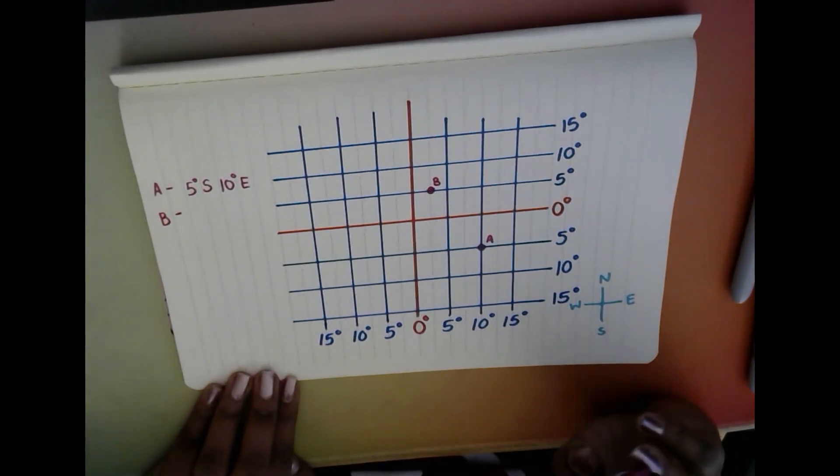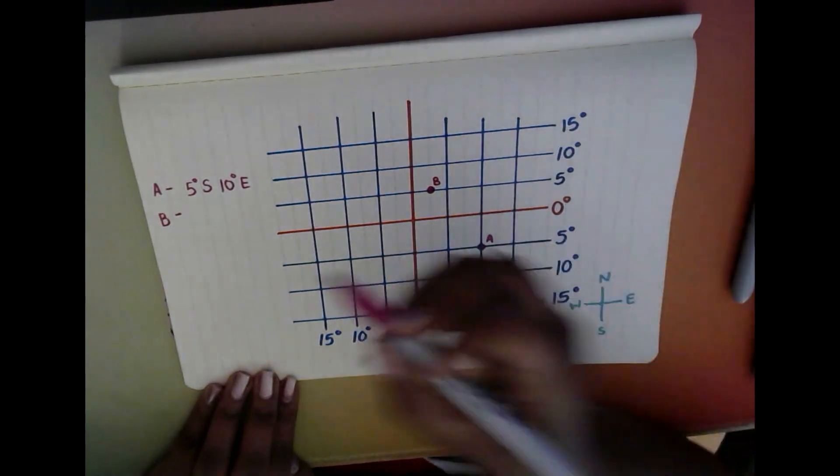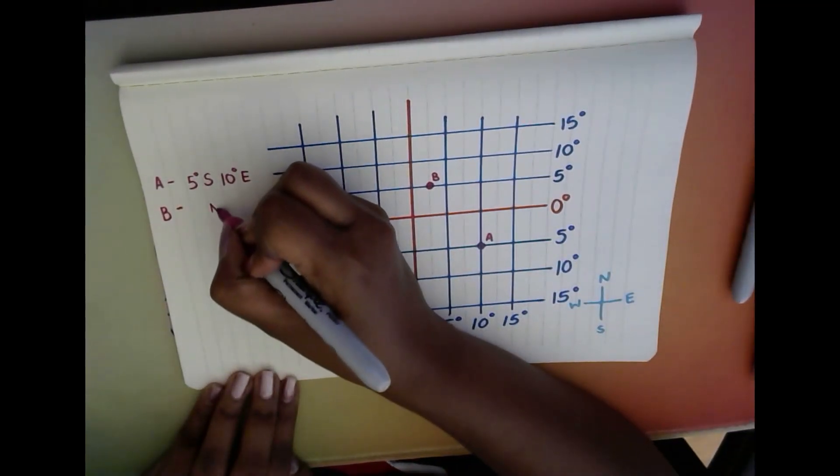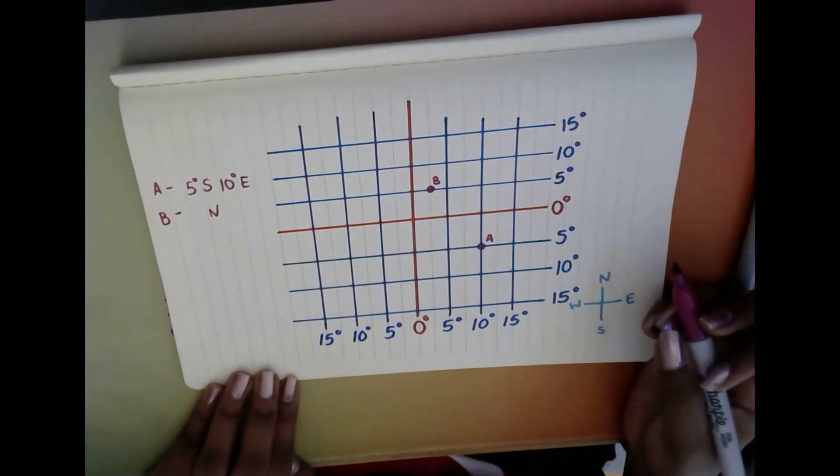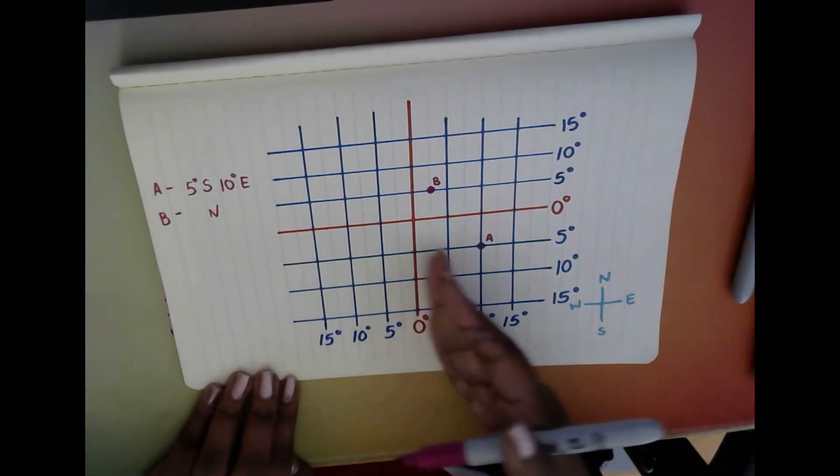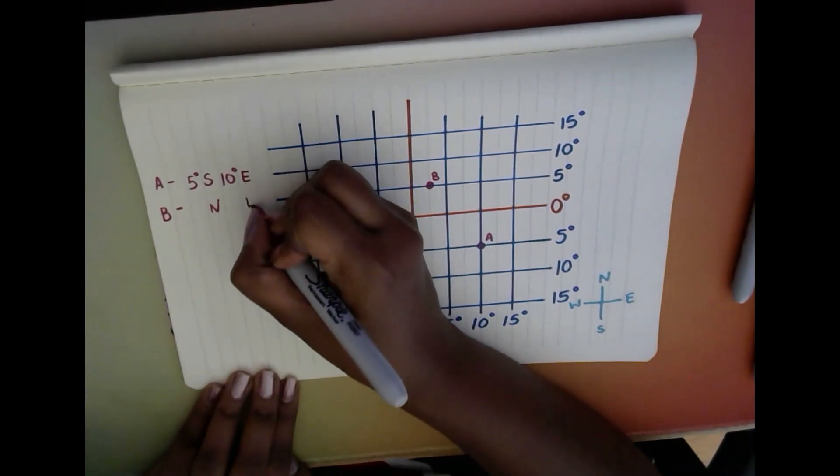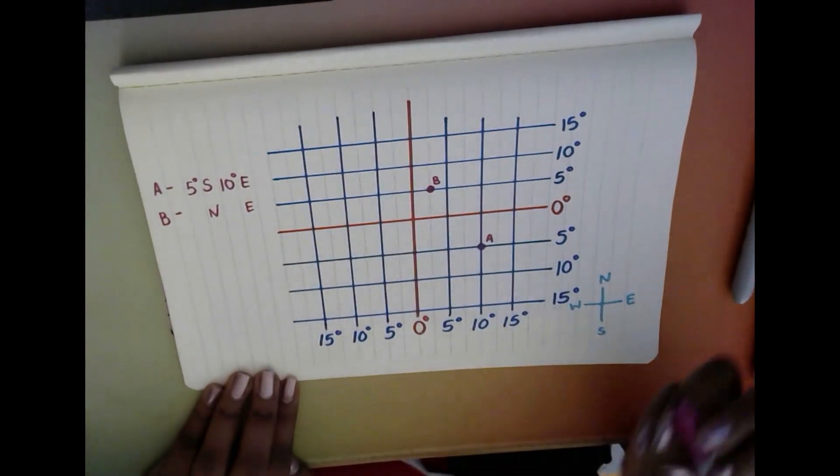So we're going to write B on the side. First thing we ask ourselves is: is B in the north or the south? We can see it's above the equator so it is in the north. And then we ask ourselves: is it in the east or west? And we can see just like A, it's on the right-hand side of the Greenwich meridian, so it must be east as well.